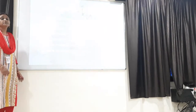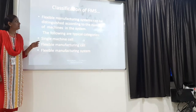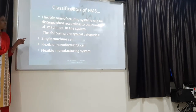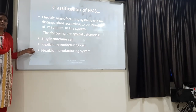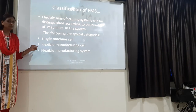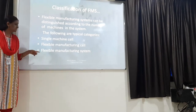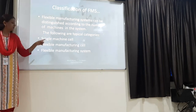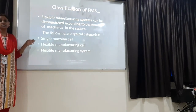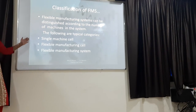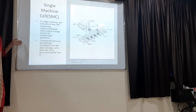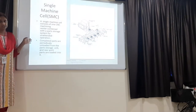There are different types of Flexible Manufacturing Systems. The classification of FMS includes three types: the first is single machine cell, the second is flexible manufacturing cell, and the third is flexible manufacturing system. Let us understand each of these in detail. The first one, single machine cell, consists of one CNC machining center combined with a part storage system for unattended operation.